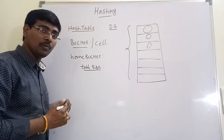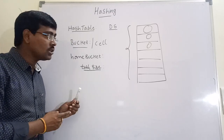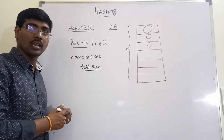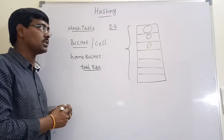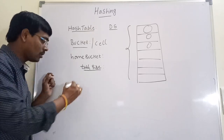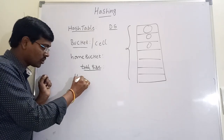Each and every hash table has some size, that is table size — the maximum number of elements that a hash table can store. For example, if size is 10, the hash table stores a maximum of 10 elements. Now coming to the important point: hash function.